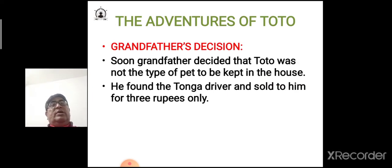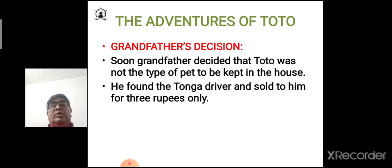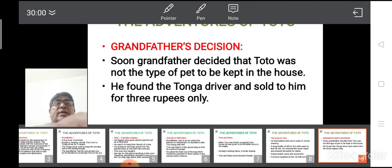Later, grandfather made a final decision. He decided that Toto was not the type of pet that could be a member of the household or the private zoo. He found the tonga driver and sold Toto back to him for only three rupees. This concludes the story 'The Adventures of Toto' written by Ruskin Bond.